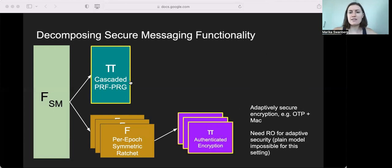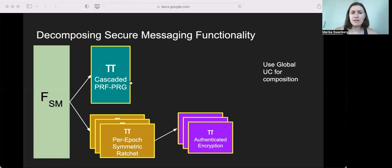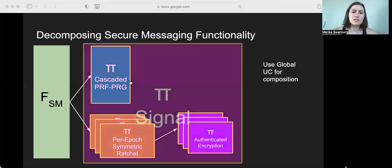And next, we can realize the authenticated encryption functionality with any adaptively secure encryption scheme like OneTimePad plus Mac. Here we do need a random oracle to guarantee adaptive security. And lastly, we make the public ratchet component a global UC functionality. And this allows us to compose all of these sub protocols into the original signal protocol.